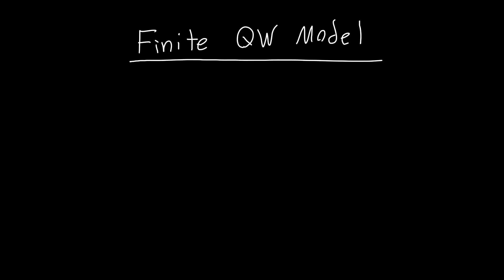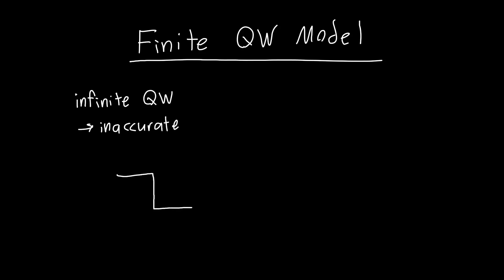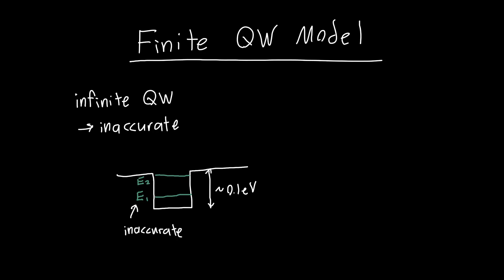In this video I'm going to talk about the finite quantum well model. In the last video about the infinite quantum well, we said that it can often be inaccurate. In practical quantum wells where the actual well depth is on the order of a fraction of an electron volt, like 0.1 electron volts, the energies predicted using the infinite quantum well model — the ground state energy E1, E2, and so on — would be rather inaccurate. So we want a model that can predict the energies within this finite well as well as give us the wave function ψ(x).